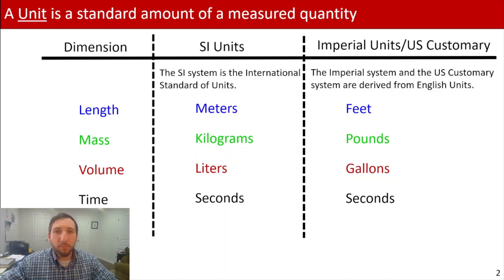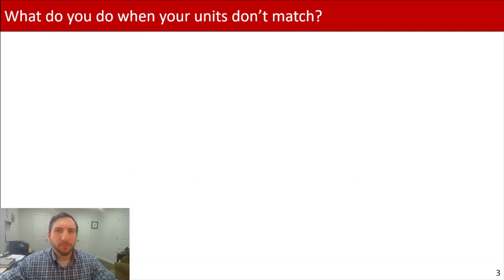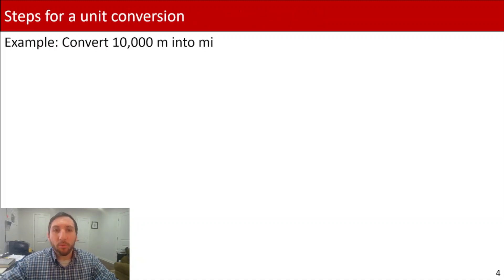One of the differences between imperial and US customary units is that there are minor differences with respect to certain units, particularly volumes, but the majority of units you'll come across are going to be pretty similar. For anything in this video or future videos, it's going to be with respect to US customary units or the American engineering system. Now, what do you do with units when they don't match? Well, in that case, we're going to have to do a unit conversion — convert the current unit we have into a different unit that we want.